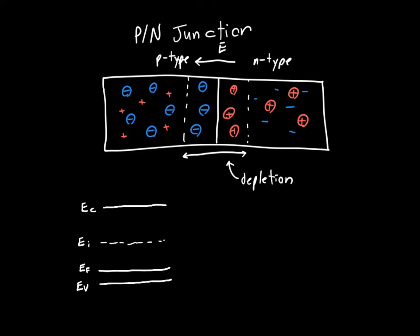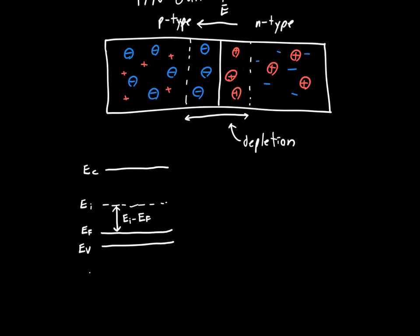And we know that this quantity here, this difference between these two energy bands, EI minus EF, we have a formula for that. It's just KT times the natural log of the acceptor concentration NA divided by the intrinsic carrier concentration NI. So we know how to draw the P-type's band diagram.